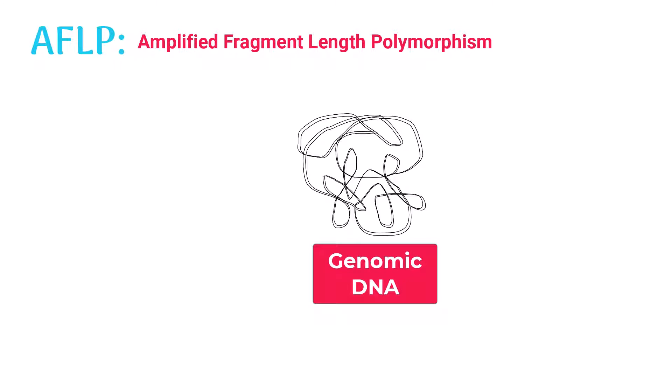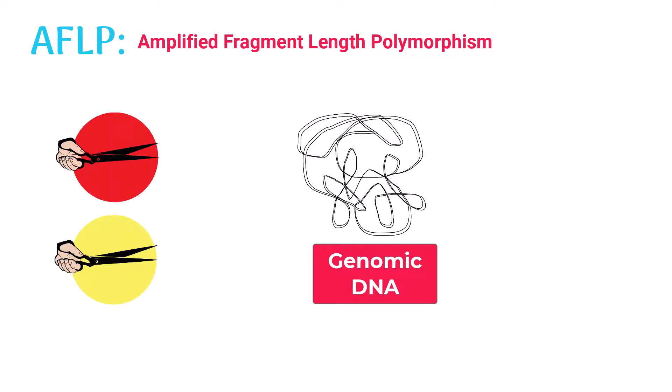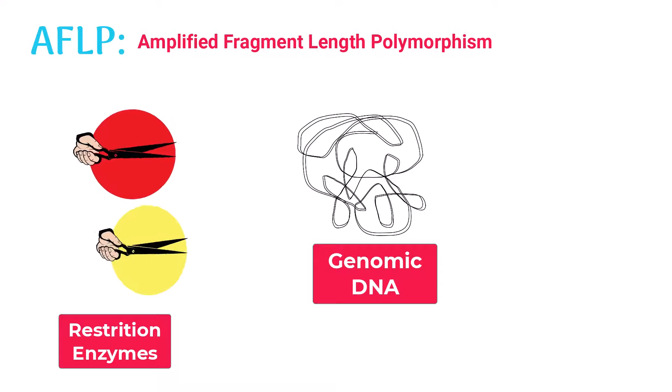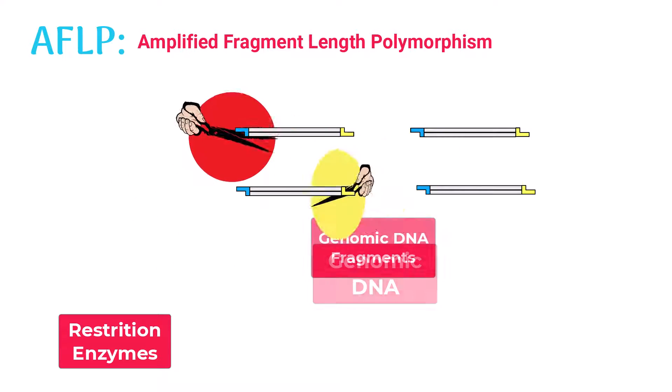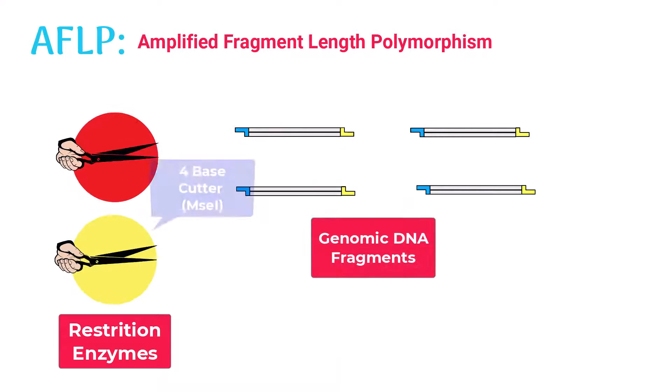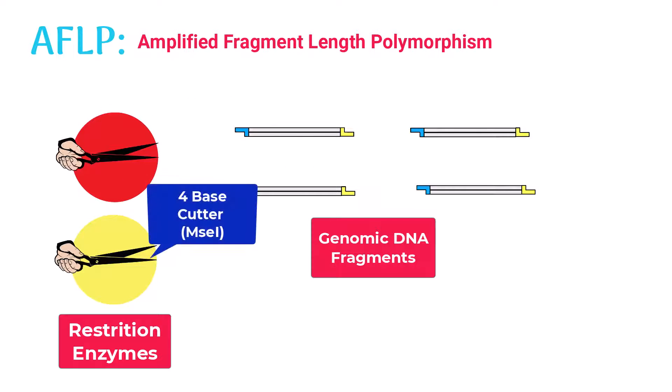In the next step, two different restriction enzymes are usually used to digest the DNA. One is a four base cutter and the other one is a six base cutter.